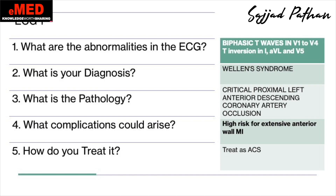The pathogenesis here is a critical proximal left anterior descending coronary artery lesion. This patient is at high risk of developing an extensive anterior wall MI. If the patient is symptomatic, treat it as a STEMI. If the patient is asymptomatic, still treat it as an ACS and refer to cardiology for a PCI. Let's look at the second ECG.